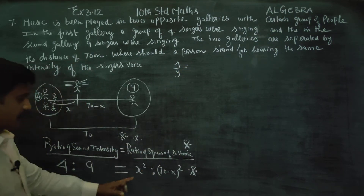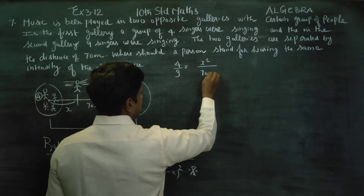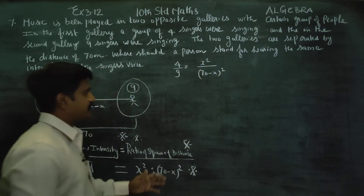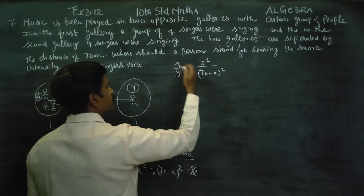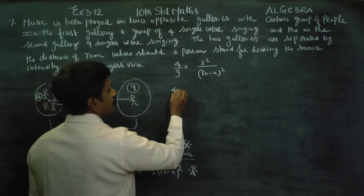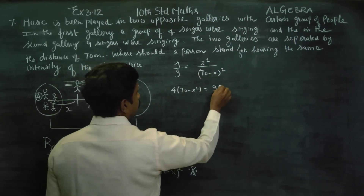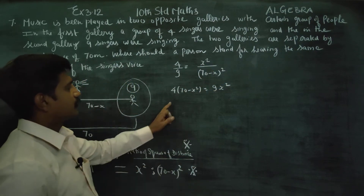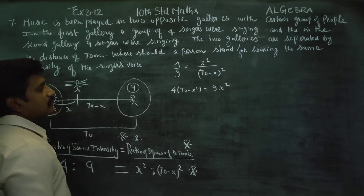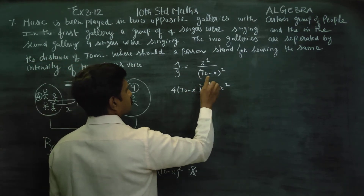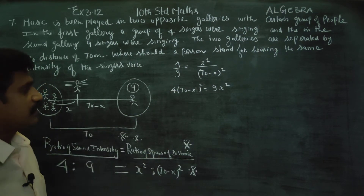4 by 9 is equal to x squared by (70 minus x) whole squared. Cross multiply: 4 into (70 minus x) whole squared is equal to 9 into x whole squared.